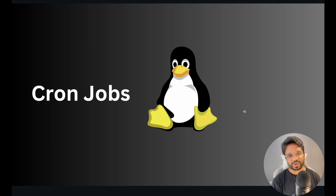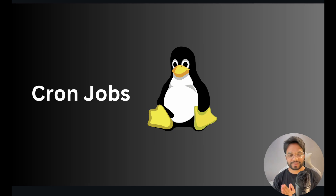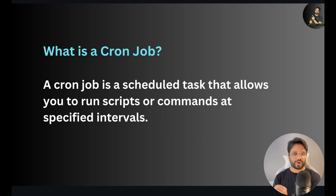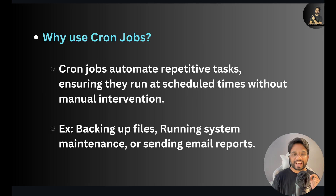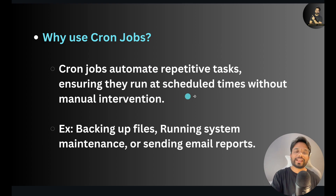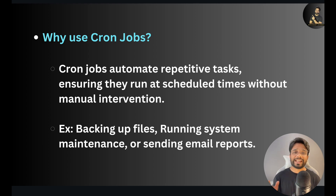In this video we will talk about cron jobs. If you want to automate your tasks and save tons of time, this video is for you. A cron job is a scheduled task that allows you to run a script or commands at a specified interval. It can help us automate repetitive tasks, ensuring they run at scheduled times without manual intervention — we don't need to sit in front of the server and run scripts manually.